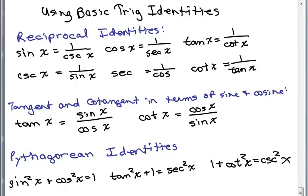You should have already learned these basic trig identities, the reciprocal identities, the tangent and cotangent written in terms of sine and cosine, and the three Pythagorean identities, sometimes called the fundamental identities. So we're going to use these to do some simplifying.